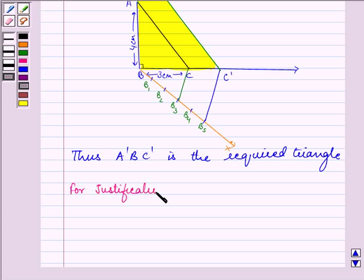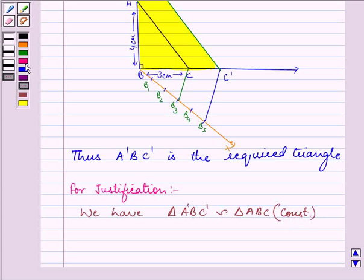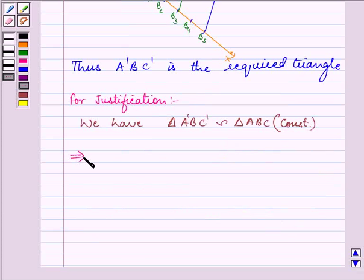Now for justification for the construction that we have done above, we have triangle A dash BC dash similar to triangle ABC that we have done by construction. So this implies that the corresponding sides are proportional to each other.